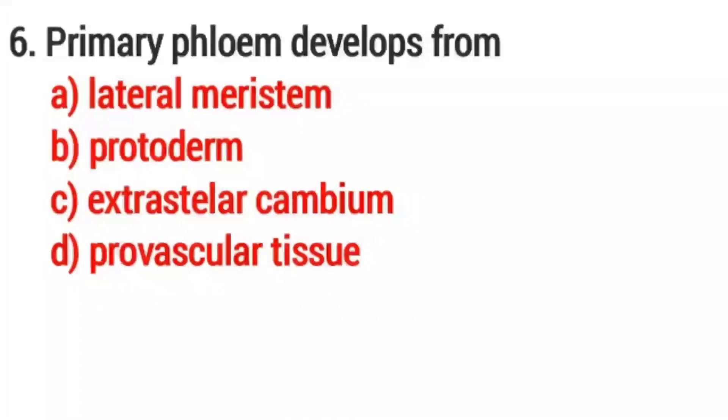6. Primary phloem develops from? Option D. Provascular tissue.